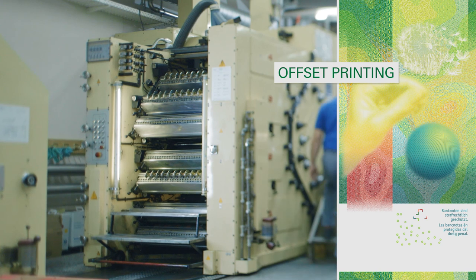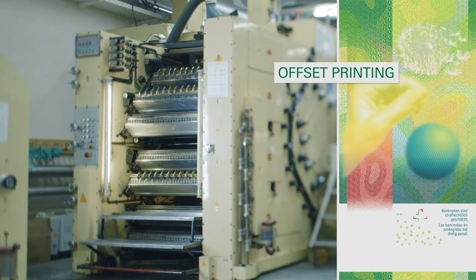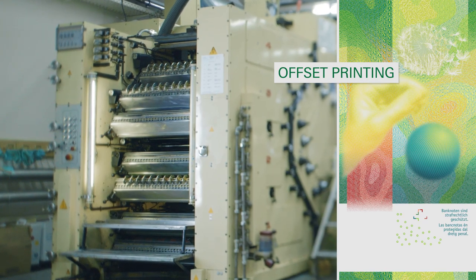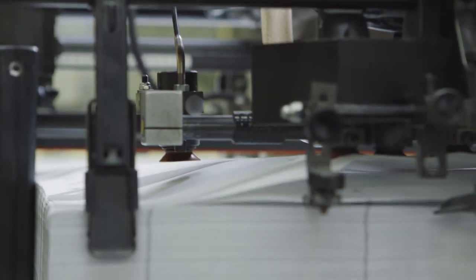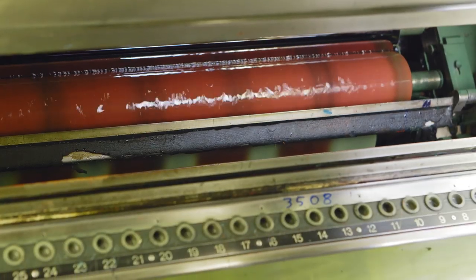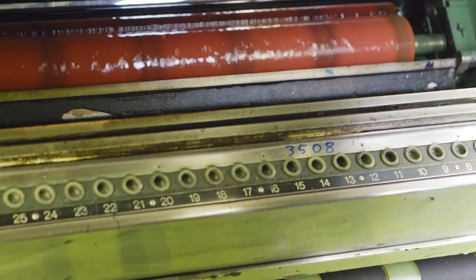The process begins at the offset printing press, where a multicoloured background print is applied to the paper. Both sides of the paper are printed simultaneously in a process that demands absolute precision. The print on the front and back of the banknote must be aligned down to the last millimetre.